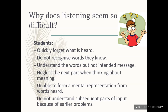Third, they understand the words but not the intended meaning. Some students understand the words but not necessarily what was actually meant. Fourth, they neglect the next part when thinking about the meaning. This is a problem when students overthink a specific meaning for a specific word and neglect the next part of what is being said, especially in a long story or passage, thus losing the coherence of the whole passage being heard.